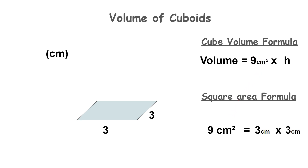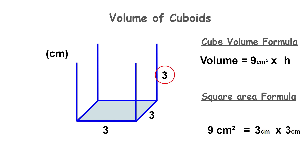Now that we've calculated the area of the base shape, we need to multiply this by the height of the cuboid. Remember the length and width of the cube is three centimeters, so the height is also three centimeters. Let's place that into our formula.